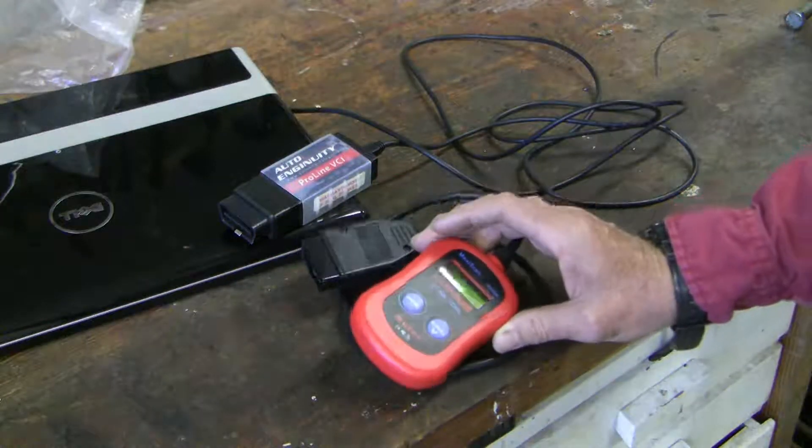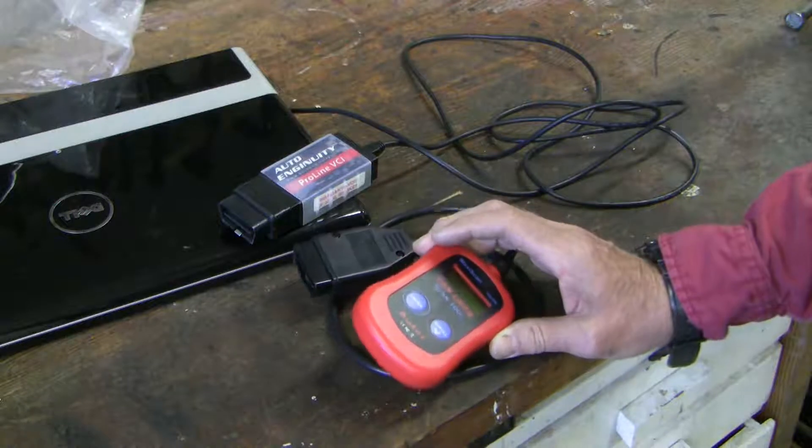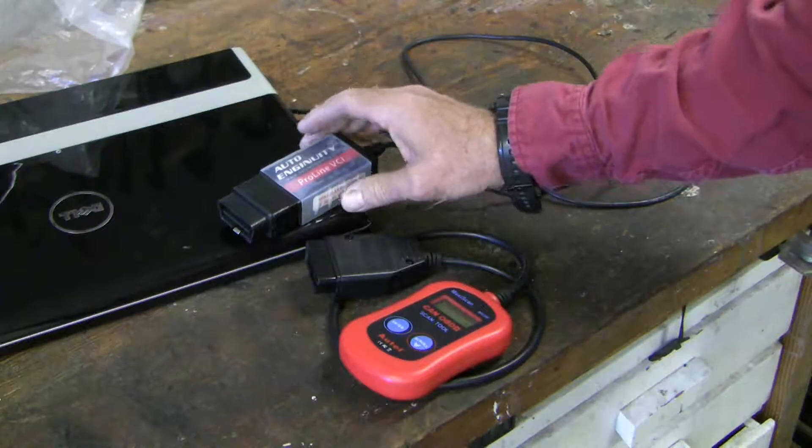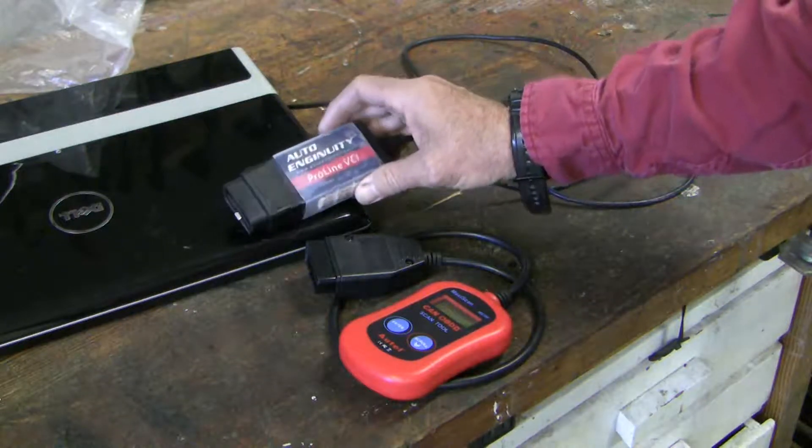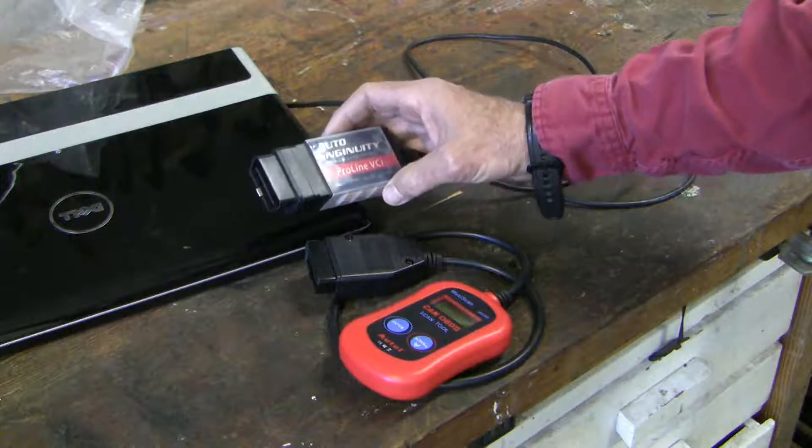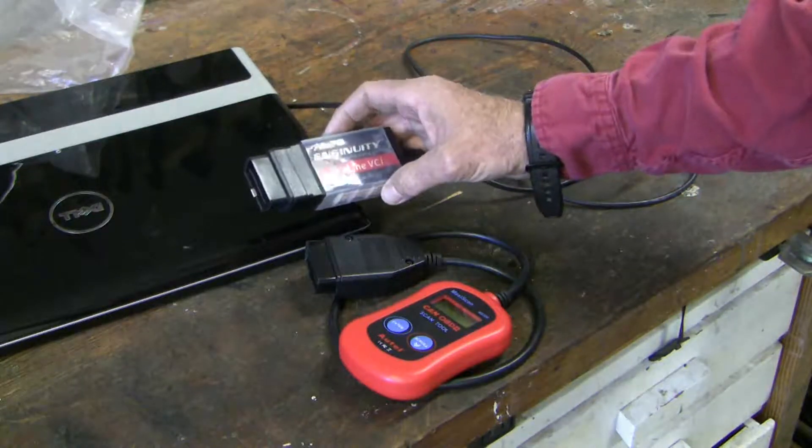The cheap ones, like this one here by Autel, are read-only, sometimes faster, and if I just need to erase a code, I still use one of these. The more expensive scanners are slower, but they show live data with more codes and more detail. This one here is by Auto Ingenuity, it's the one I've been using, although it has its own limitations. I find it a little bit buggy.